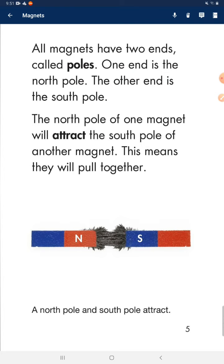All magnets have two ends, called poles. One end is the north pole. The other end is the south pole.